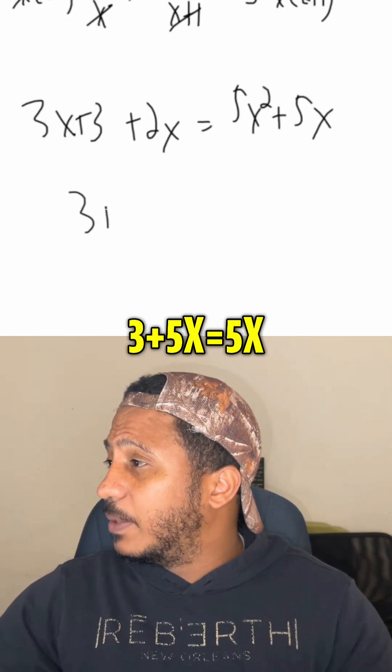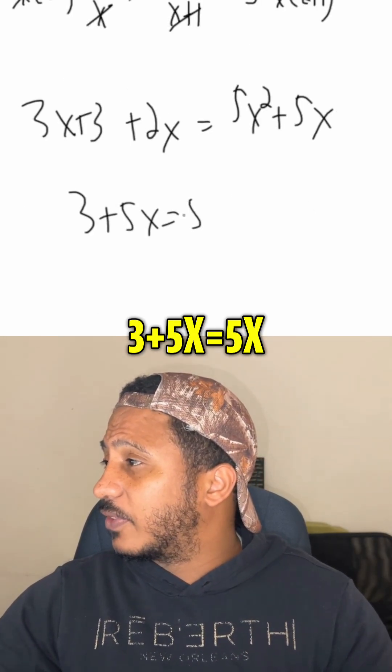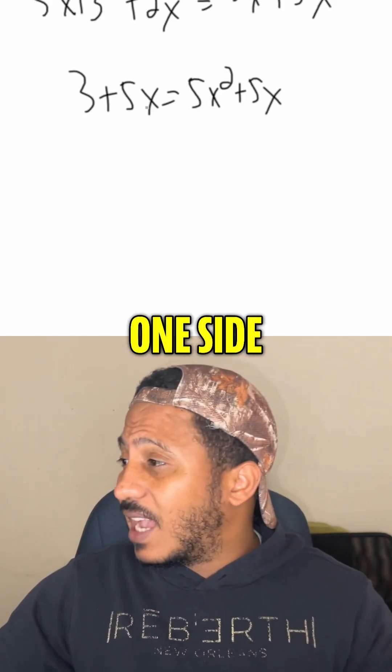All right, first let's combine like terms. So we get 3 plus 5x equals 5x squared plus 5x. Bringing everything to one side, we get